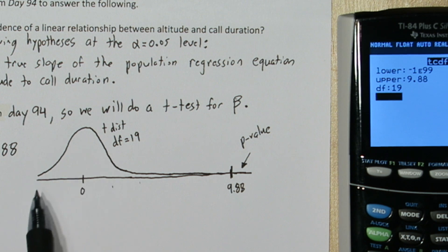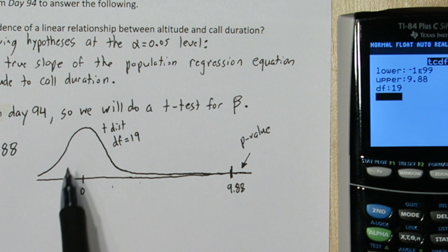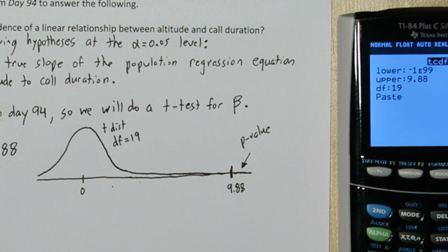Now if we look back at the t-distribution we drew, this is going to give us all of this area. Now the total area is 1. So if we take whatever value it gives us and we subtract it from 1, it should give us our p-value on the other side.